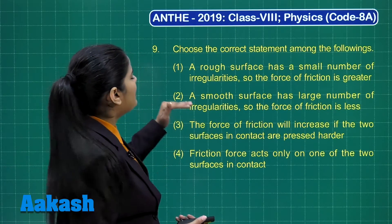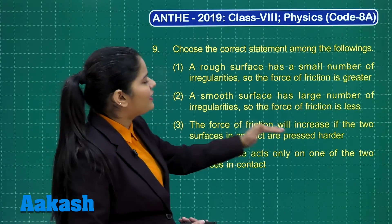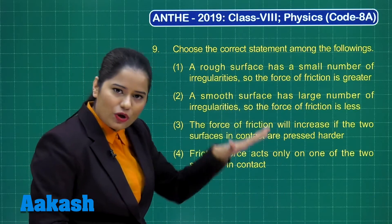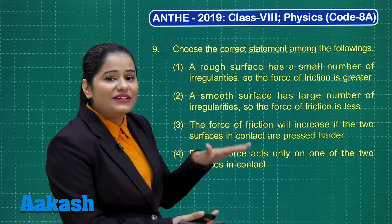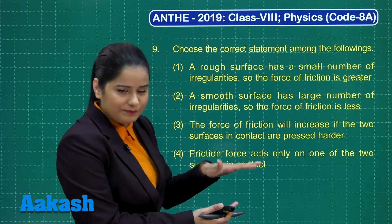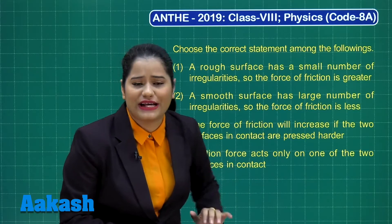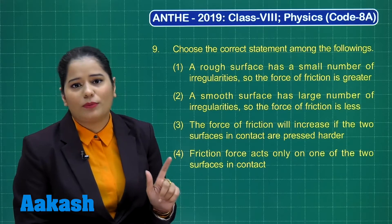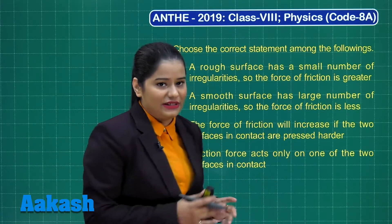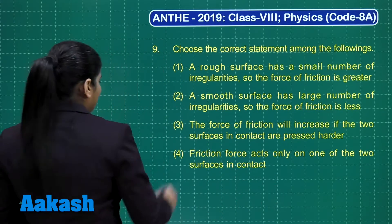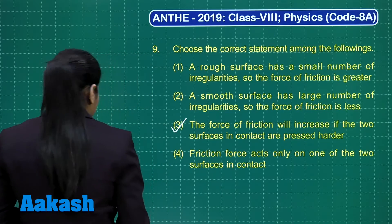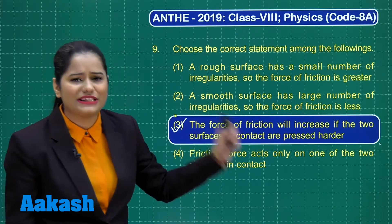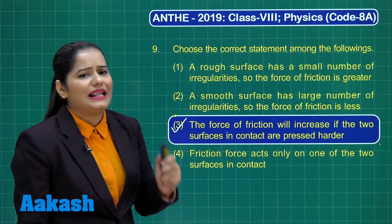Statement three is correct: the force of friction will increase if the two surfaces in contact are pressed harder. By pressing the object harder, we increase the normal reaction, and since frictional force is directly proportional to the normal reaction, it increases. So the correct answer is option number three.